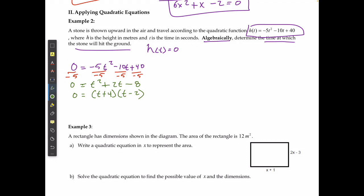Well, I have two possibilities here. In one case, if t plus 4 is equal to 0, then t would equal negative 4. In this case, if t minus 2 is equal to 0, t would equal positive 2.